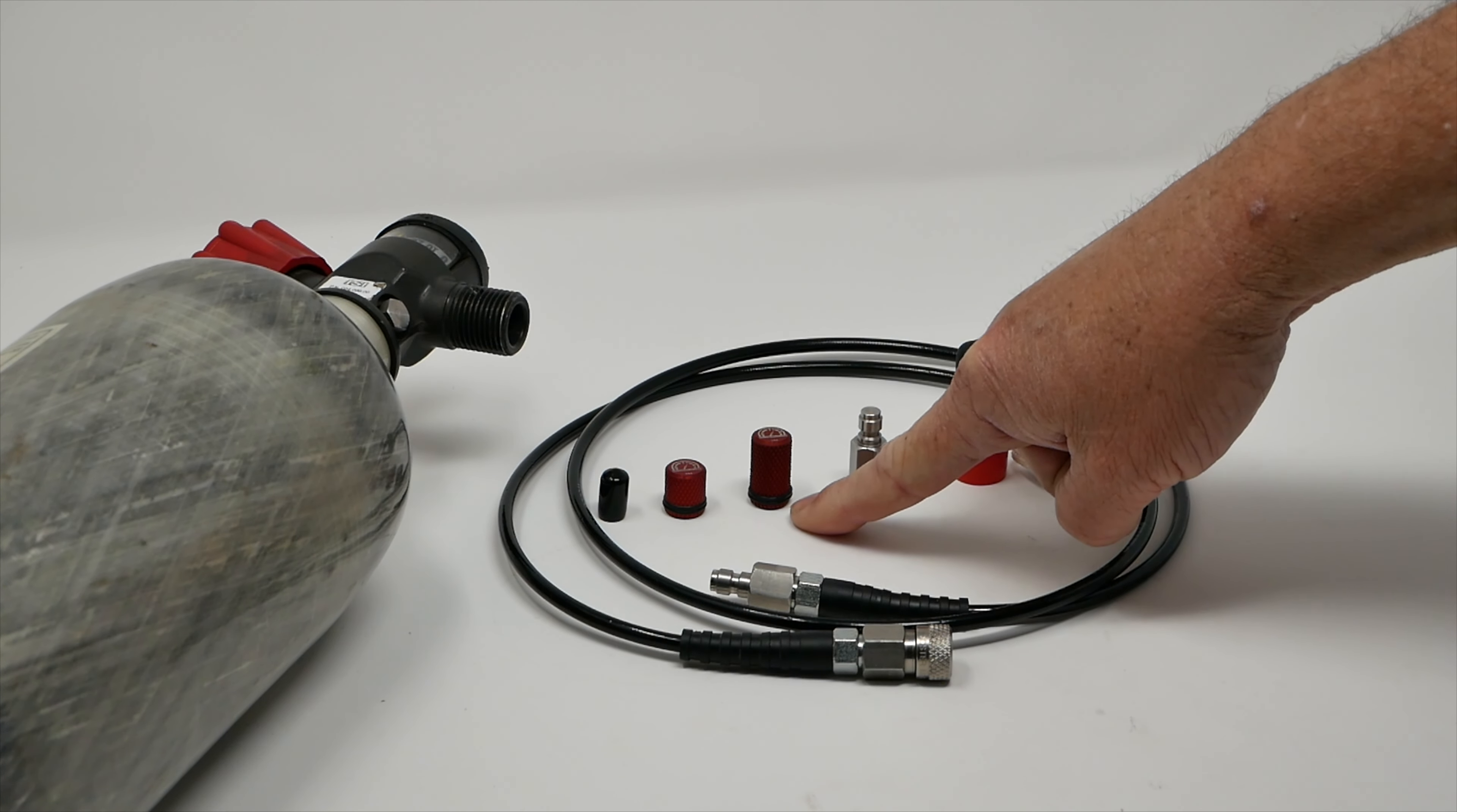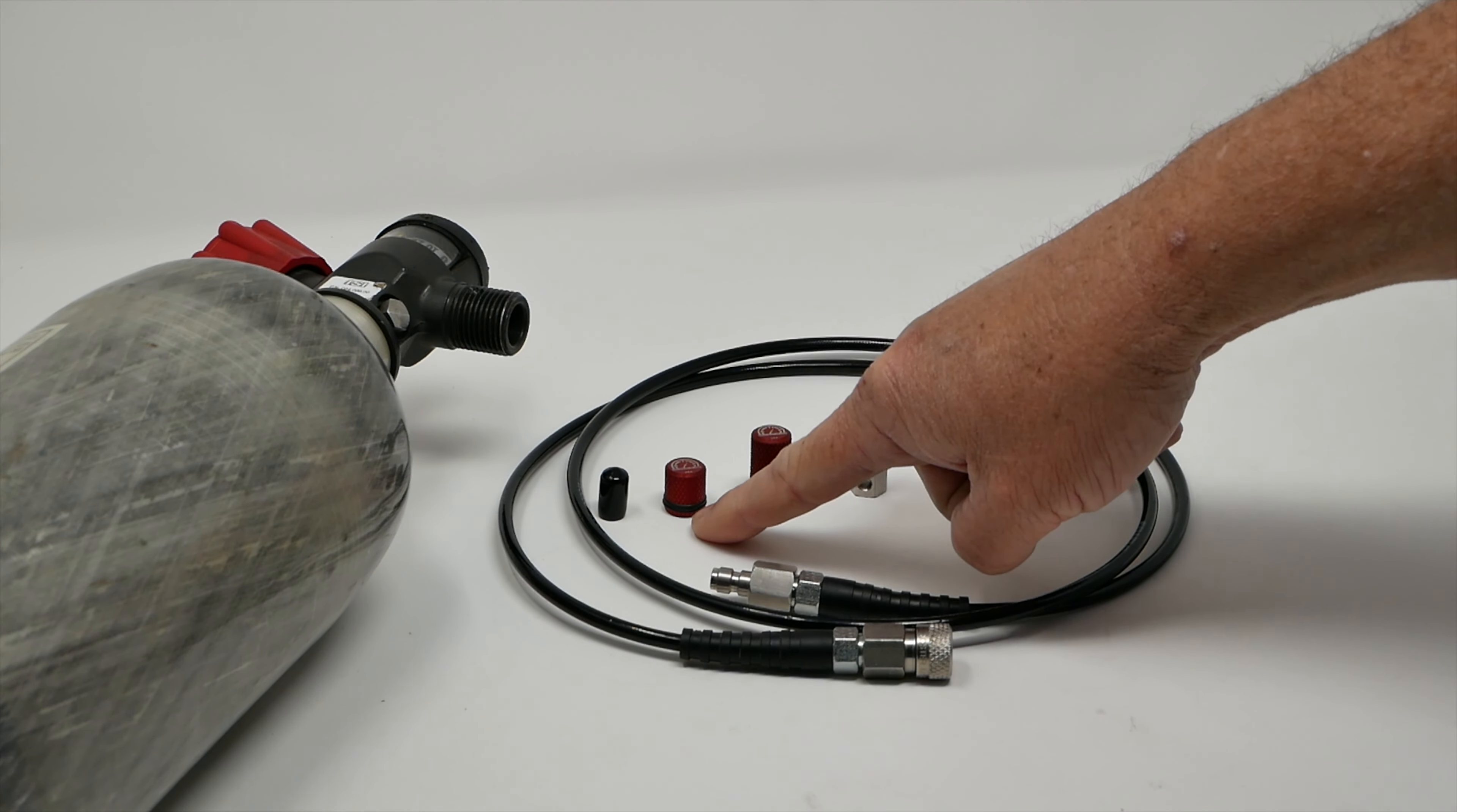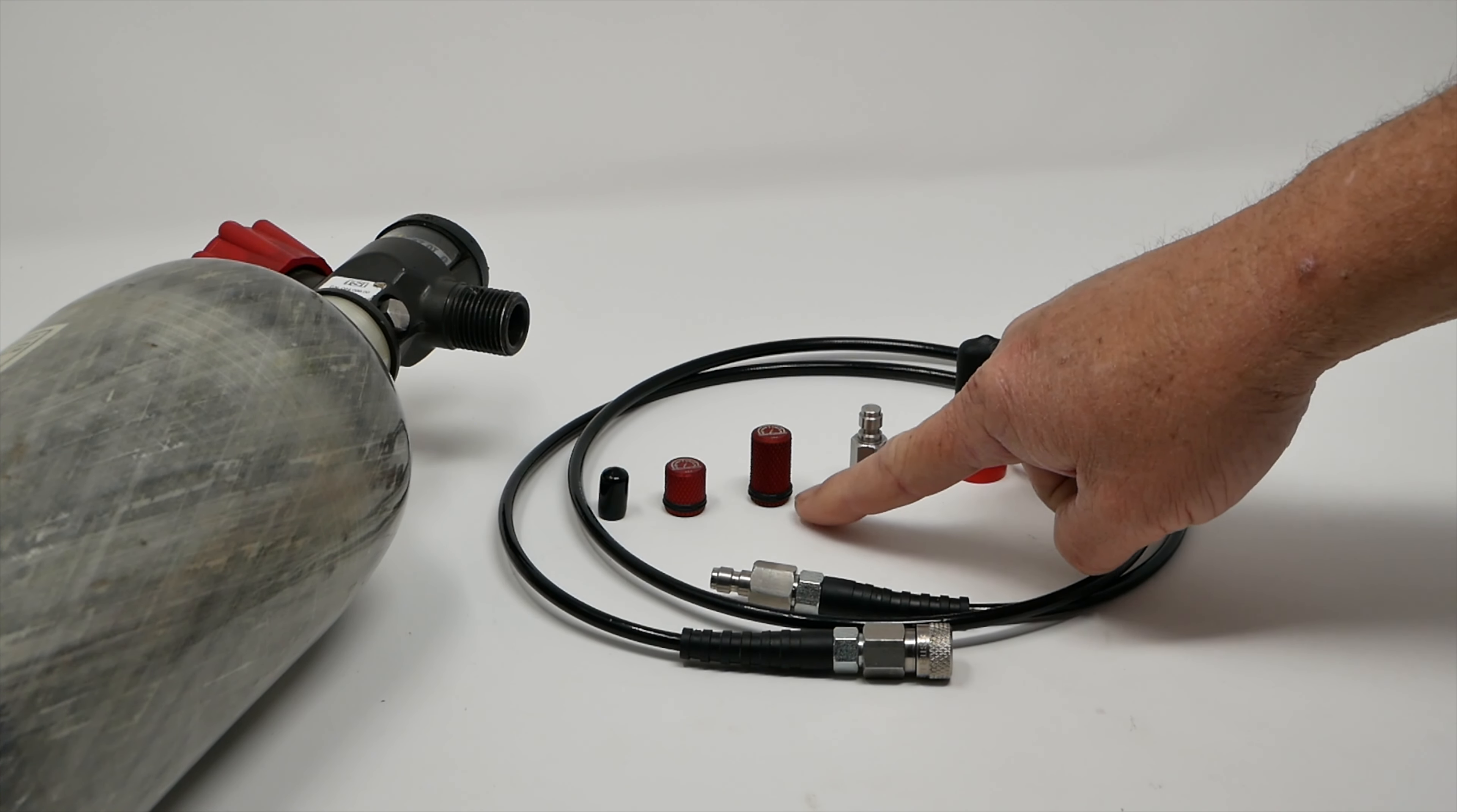We also make this in an extra long version. This would be for your rifles like the FXs that have a deep well that the fill port is located in, and if you were to put the smaller one in you wouldn't be able to reach in and grab it and pull it back off. So we make an extra long version.